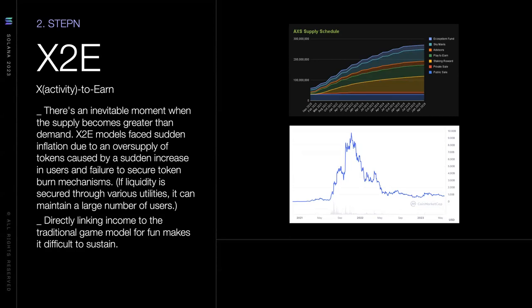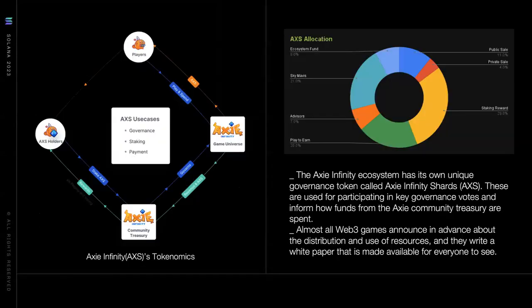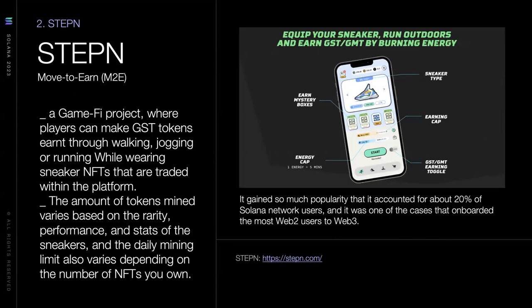We believe that in the future we'll have different concepts, like play and own. Blockchain technology can help with in-game secure trade, better matchmaking, and similar features. Play-to-earn is an early stage concept. Today I want to introduce other various games in Web3. Next is STEPN — Move-to-Earn (M2E) is similar to Play-to-Earn (P2E). M2E generates revenue through movement activities such as walking, jogging, and running. STEPN is a GameFi project where players earn tokens through walking, jogging, or running. The amount of tokens mined varies based on the rarity, performance, and stats of sneakers, and the daily mining limit varies depending on the number of NFTs you own.